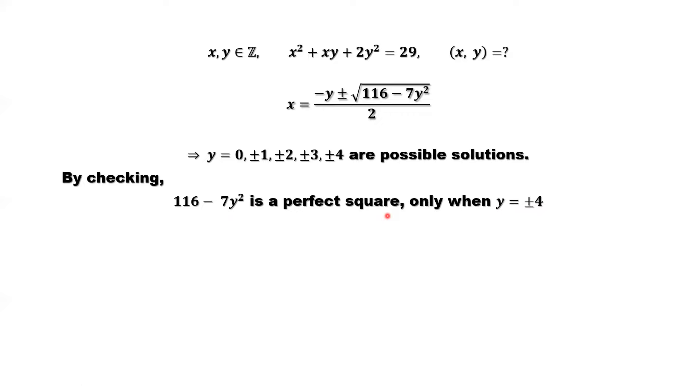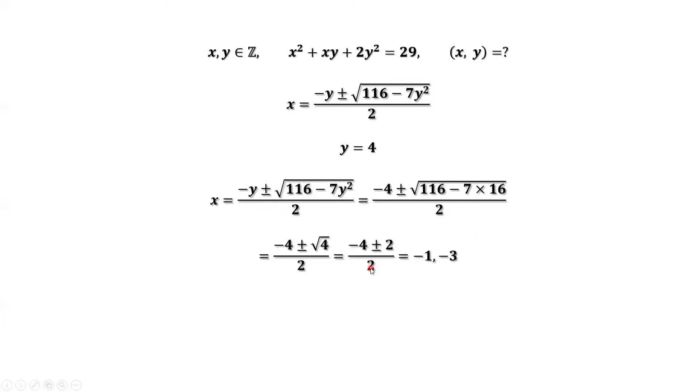Next, we consider y equals 4 and y equals -4 to find the corresponding x values. When y equals 4, we only need to replace y by 4 here to find the two answers because it has plus minus. We have two answers for x: x equals -1, x equals -3 corresponding to y equals 4.